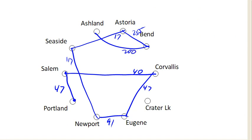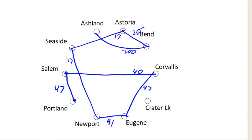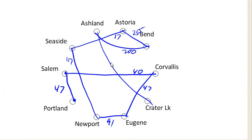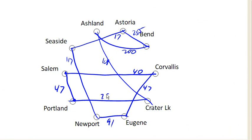From Ashland, I don't have a lot of choices — I'm going to Crater Lake. So from Ashland, I'm going to go to Crater Lake, which is 108 miles away. And then, of course, I need to return back to Portland. So from Crater Lake, I'm going to go back to Portland, which was 285 miles. I could add those all up, and there is my circuit generated by the nearest neighbor algorithm.